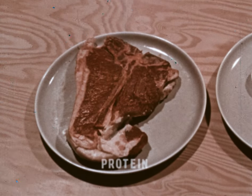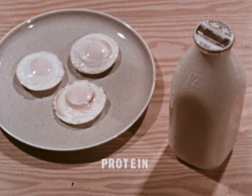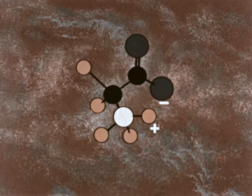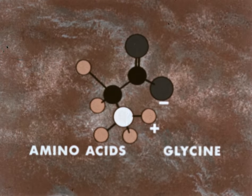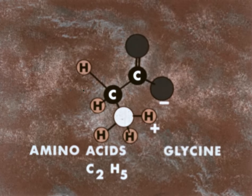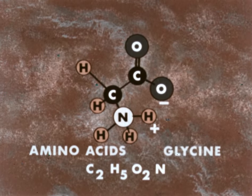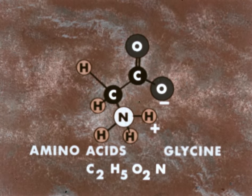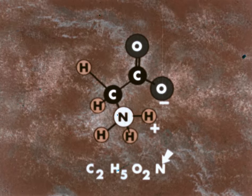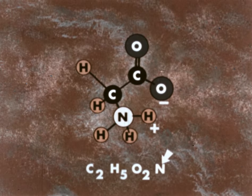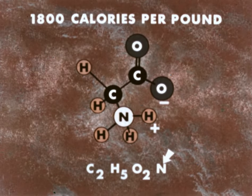The third energy producing nutrient, protein, is found in lean meats, egg whites, and milk. Protein is digested into molecules of simple amino acids, indicated by this diagrammed molecule of glycine. This molecule is made up of two carbon atoms, five hydrogen atoms, two oxygen atoms, and a single atom of nitrogen — a chemical element not present in carbohydrates or fats. The presence of nitrogen in protein molecules makes protein an essential body chemical as well as a source of body energy. When pure protein combines with oxygen, it yields about 1,800 calories per pound.